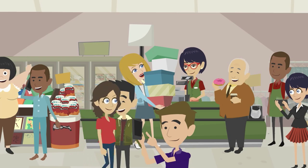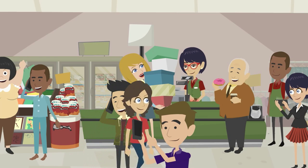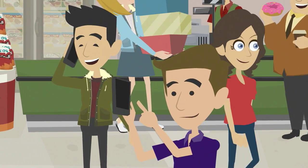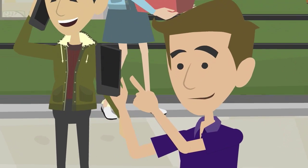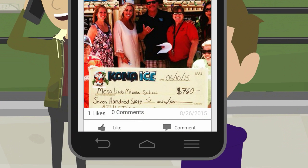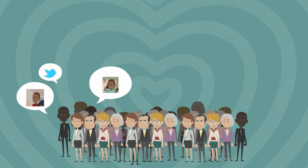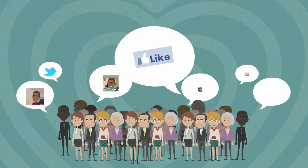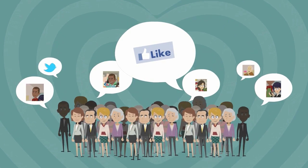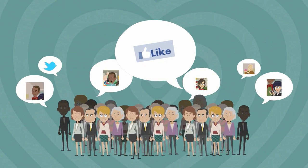When members attend Bob's event, they can comment on and like each other's posts in the Members Only community feed and spread the word to their friends, reaching twice the audience that Bob could reach on his own.